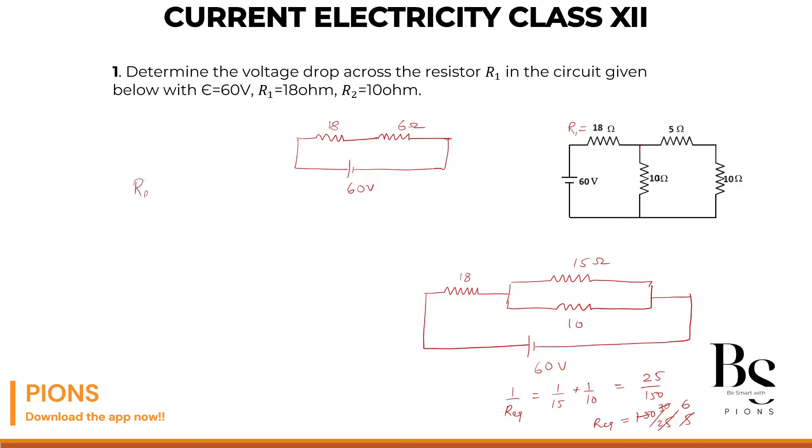R equivalent equals 18 plus 6. They are in series, so 24 ohms is our equivalent circuit. Which means if you remove all those resistors and keep a single resistor of 24 ohms, it will behave as this circuit. This is 60 volts.